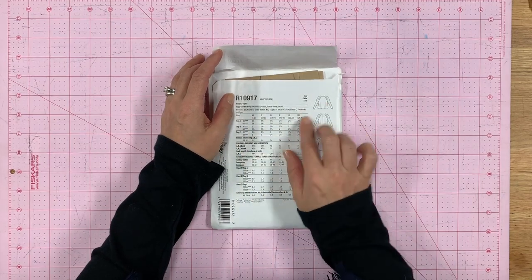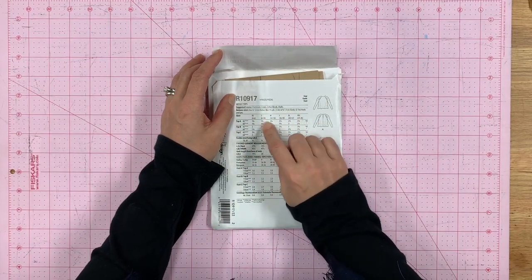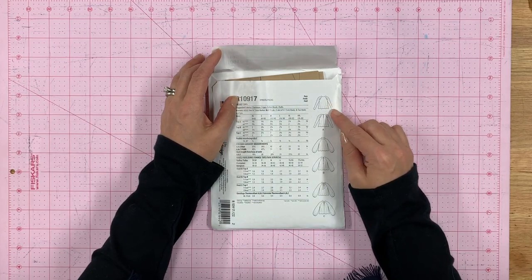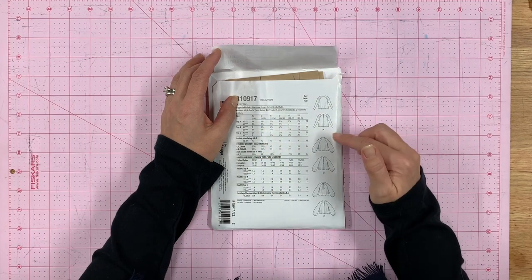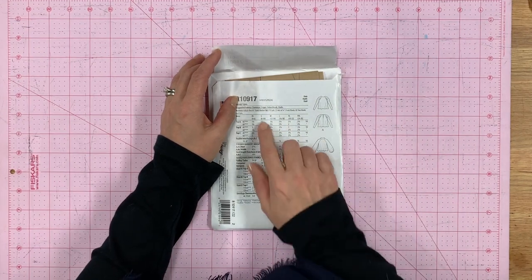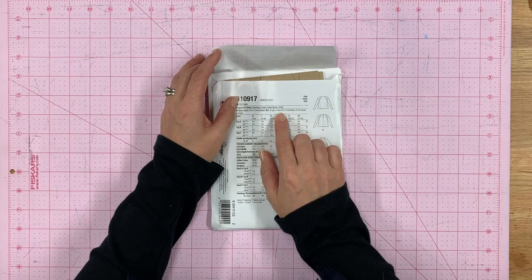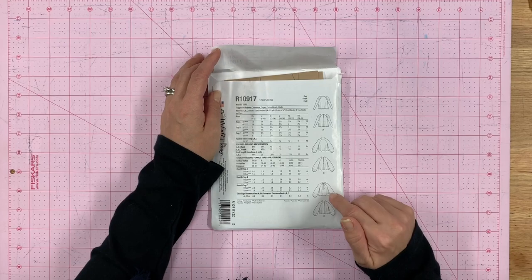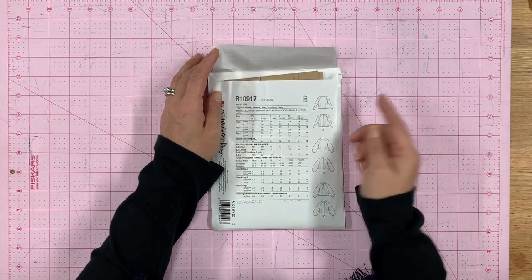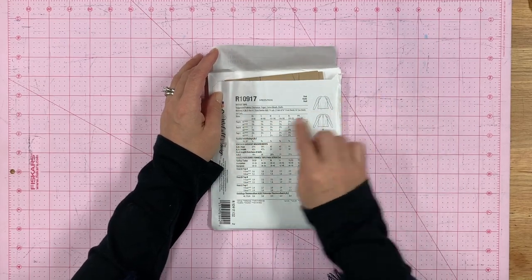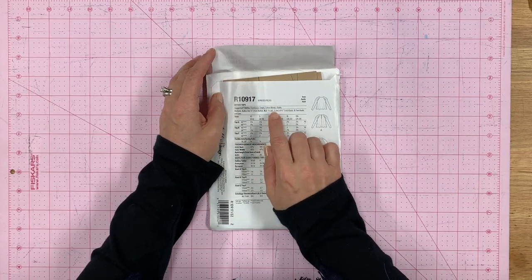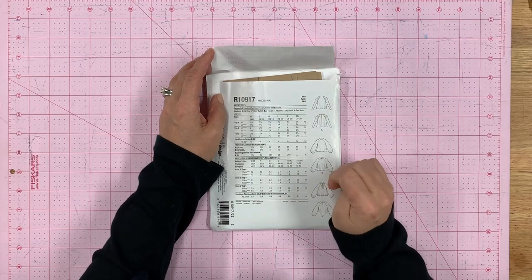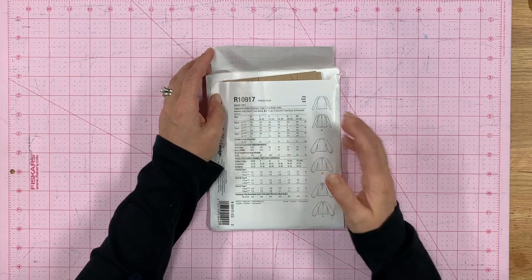Once you look at the pattern, you're also going to need things like notions. It says A, B, and C are going to need one three-eighths of an inch button. If you're doing B and C, you're going to need one and a half yards of three-eighths inch elastic. And if you're doing C, you're going to need two hooks and eyes. Before you leave the store, keep that in mind that you're also going to need those notions to make sure that you have a completed piece.